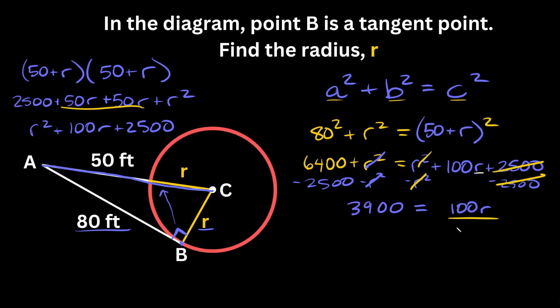Now divide both sides by 100 to solve for R. Those cancel out and we're left with R equals—all those zeros cancel out—so we're just left with 39 over 1, which is 39.